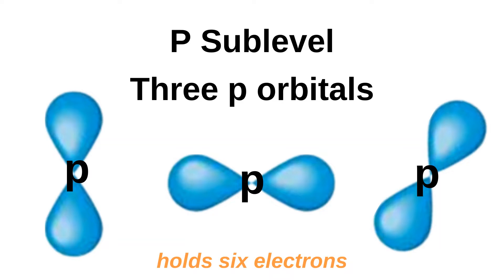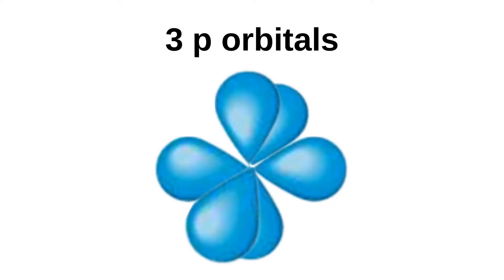The second shell and up also has a P sublevel as well as an S sublevel. The P sublevel contains three P orbitals, so it can hold up to six electrons in total. Therefore the second shell can hold eight electrons in total, as it has its S and P orbitals. Each orbital is arranged so that it occupies its own space around the nucleus.